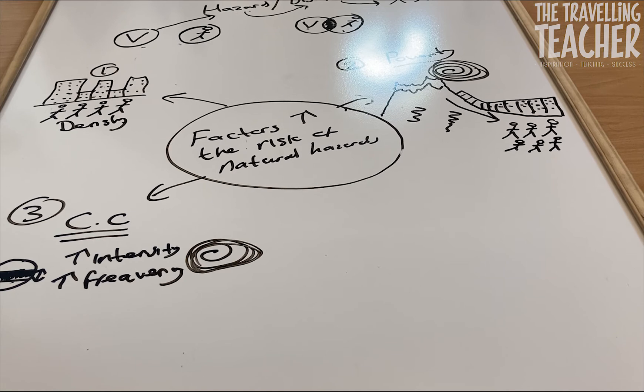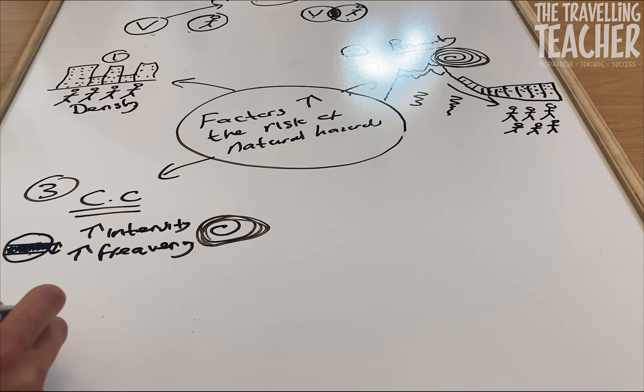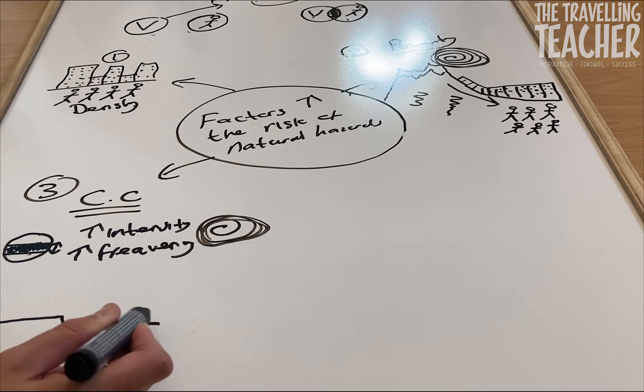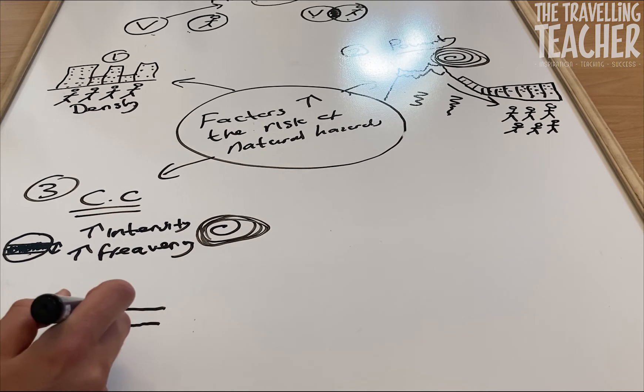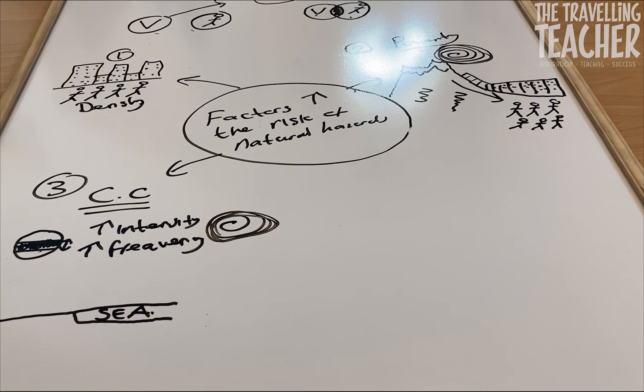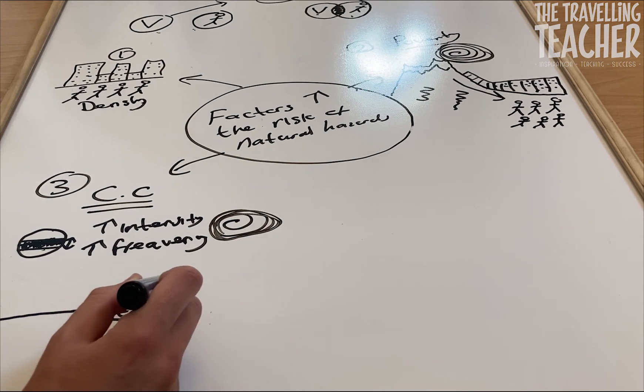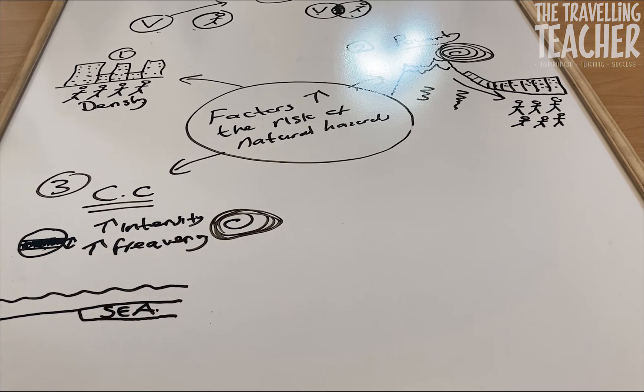Also not forgetting, if an area of the world especially coastal is low lying, there we go so there's our sea, due to sea level rise, if the sea levels begin to rise, land is then going to become flooded.